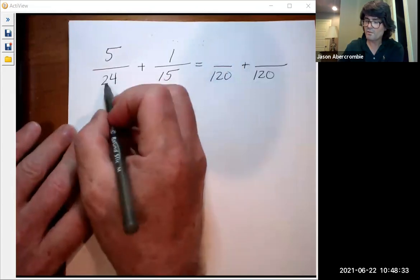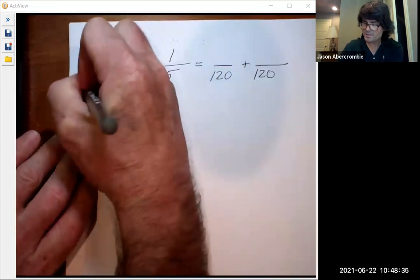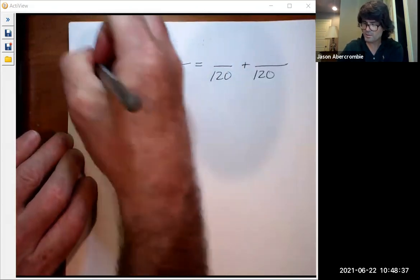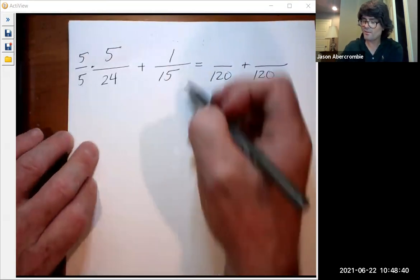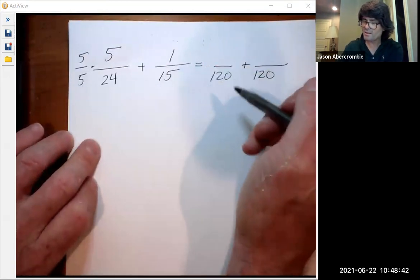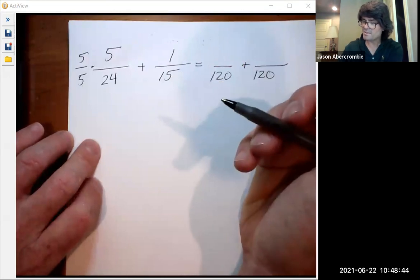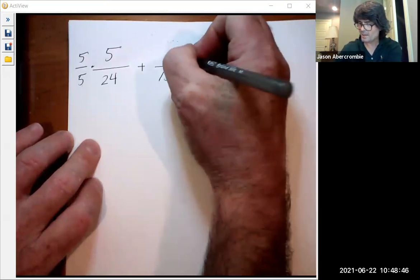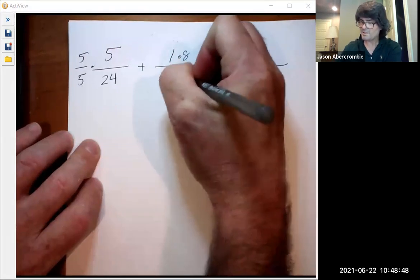Because 24 times 5 is 120, so that's 5 times 24 makes 120, and then 15 times 8 is 120. So you're going to multiply this by 8, by 8, and you're going to get 5 times 5, 25 over 120.